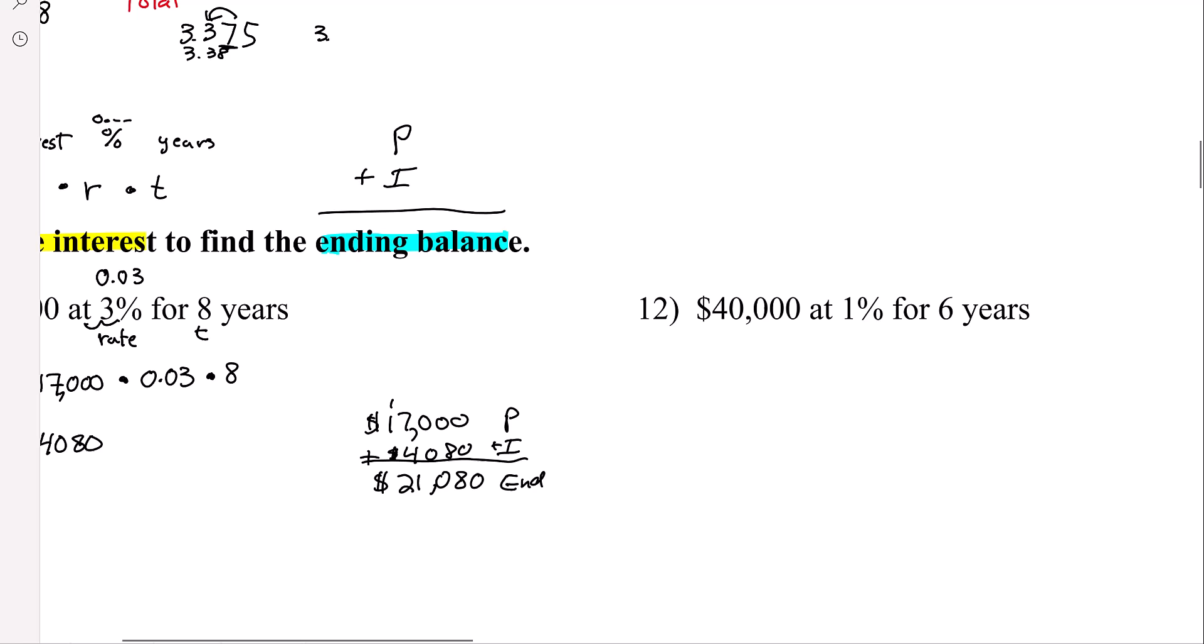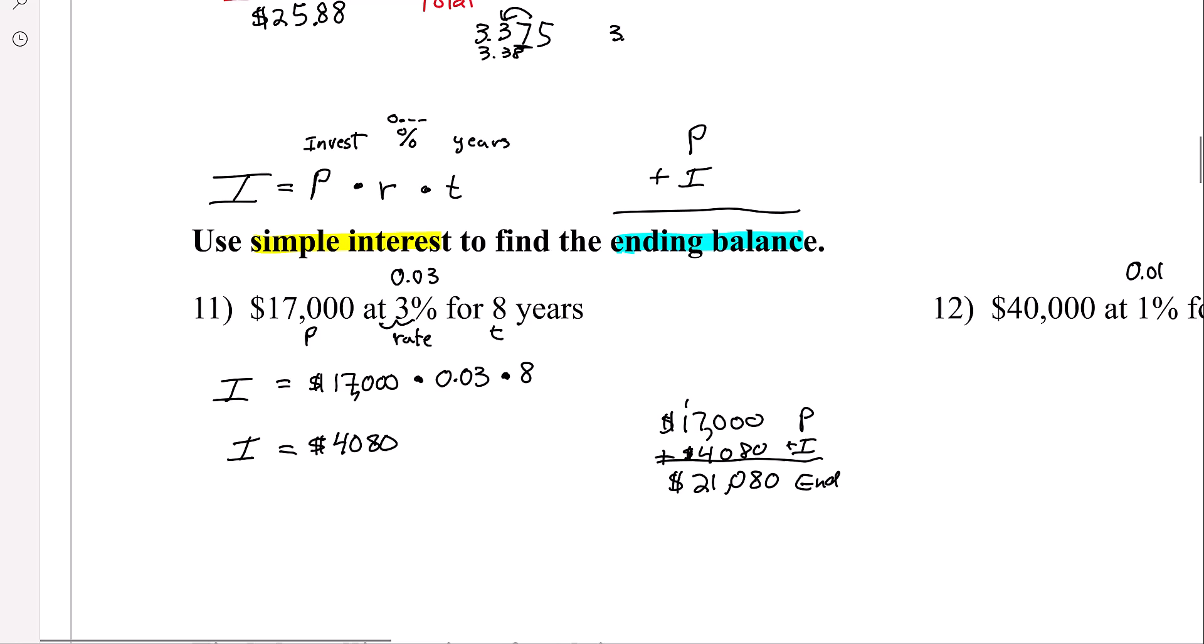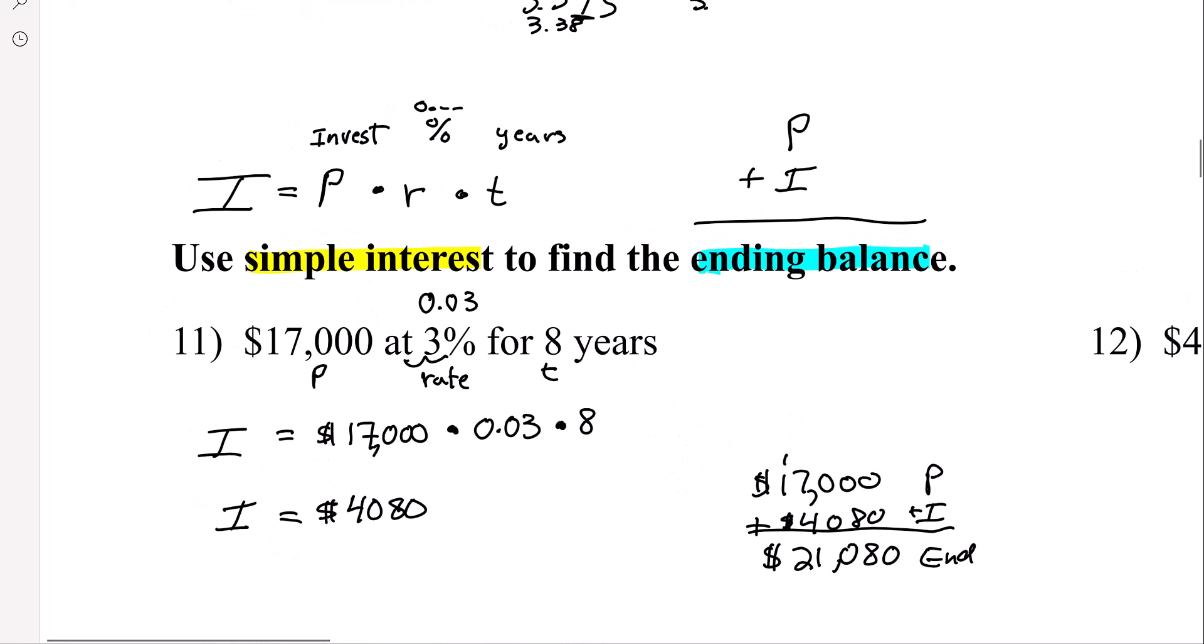And every single time when it's an interest rate, change that to a decimal. But it's the exact same formula each time on simple interest ones. All right, that's it for this one.